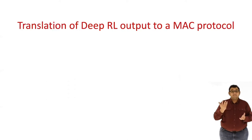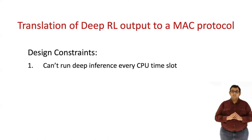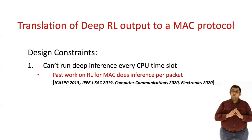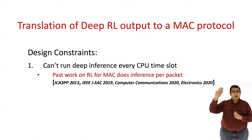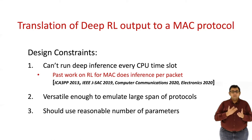However, the challenge is how do we translate the output of the deep RL model to a MAC protocol? First, newMAC cannot run deep inference every time slot to decide who transmits, because the CPU's time scale of operation is in sub-nanoseconds and you can't complete inference that fast. This is very different from past work that uses reinforcement learning to design MAC protocols, where they do inference per packet. Instead, newMAC has to generate high-level protocols that the multicore can deploy for thousands of cycles. Second, this high-level protocol model should be versatile enough to emulate a large span of protocols. And third, given the NOC constraints, we don't want our deep neural network to output thousands of parameters to achieve this versatility.